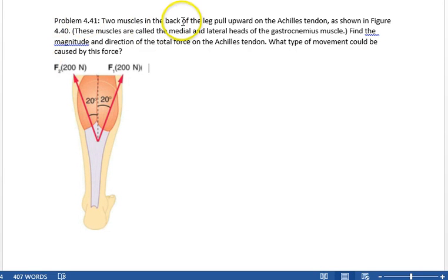Okay, problem 41 from chapter 4. Two muscles in the back of the leg pull upward as shown here. They're each 200 newtons and 20 degrees off vertical. Find the magnitude and direction of the total force on the Achilles tendon.